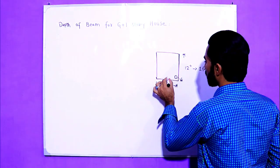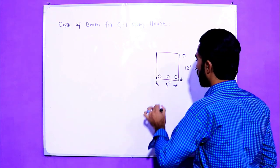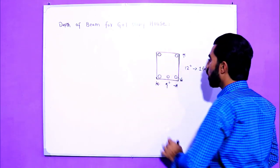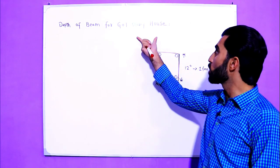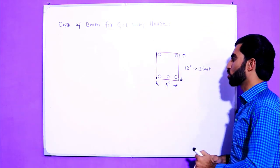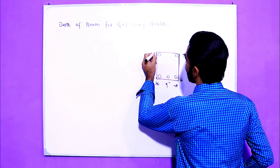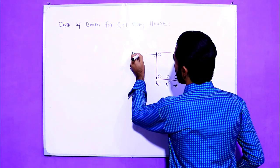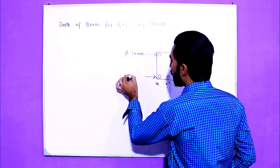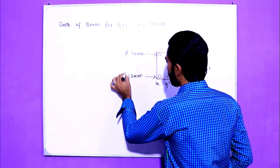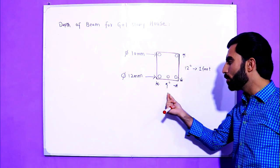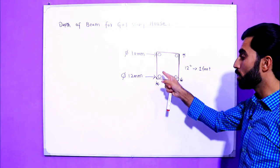For the steel structure, use three bars at the bottom and two bars at the top — five bars total — for a G plus one story house if you don't have a structural design. The diameter of the top bars should be 10 mm, and the diameter of the bottom three bars should be a minimum of 12 mm. The depth is 12 inches and the width is 9 inches.